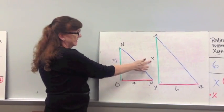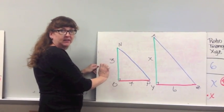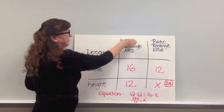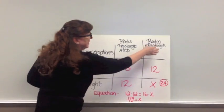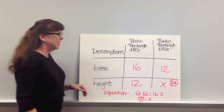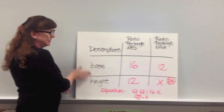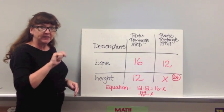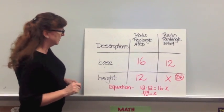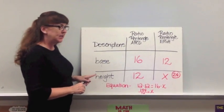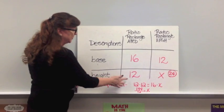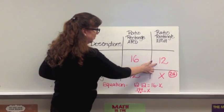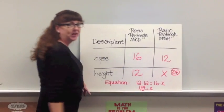So X equals 4.5 — that's the missing height of our triangle. The next problem deals with rectangles. We have the first rectangle ABCD and the second rectangle EFGH. With descriptions of base and height, you can look at your rectangles and find your corresponding sides. The base of the first rectangle is 16, the height is 12, and the second rectangle has a base of 12, with the height being what we want to find.